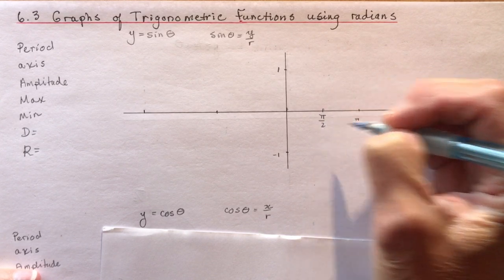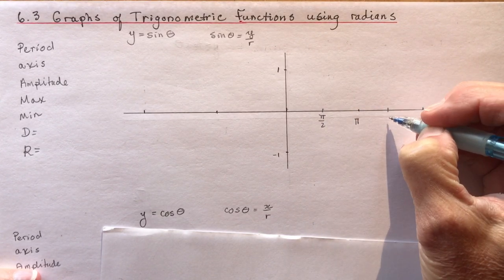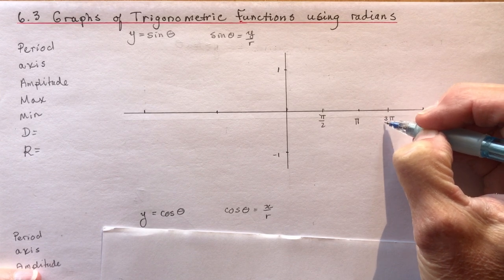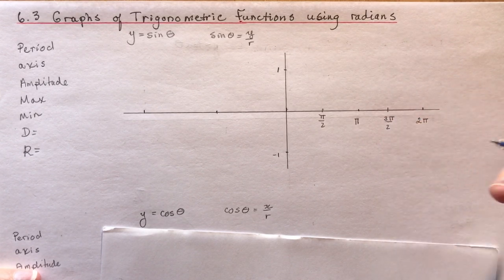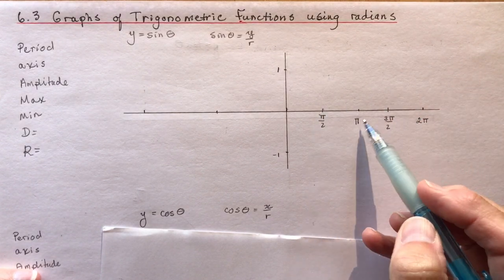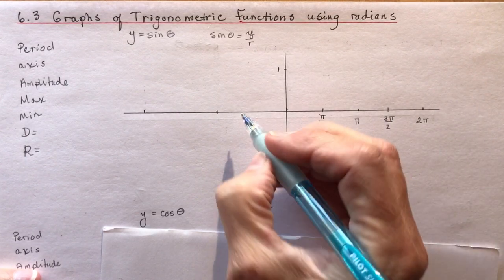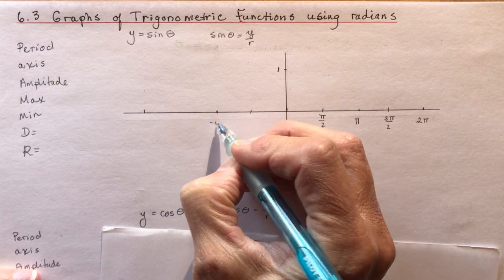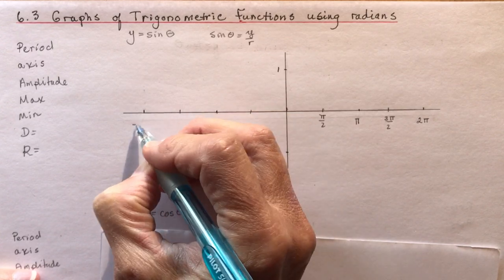So you can very easily break your graph into quarters and so we have pi over 2, pi, 3 pi over 2, 2 pi. Easy. And going the other way you could put in the same things with your negative values.